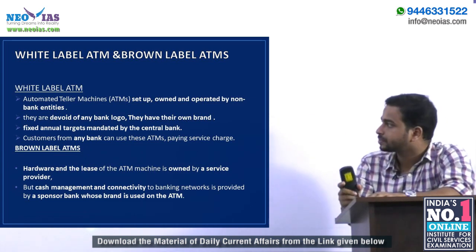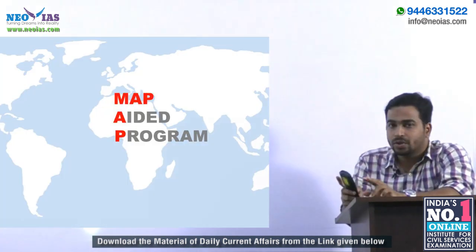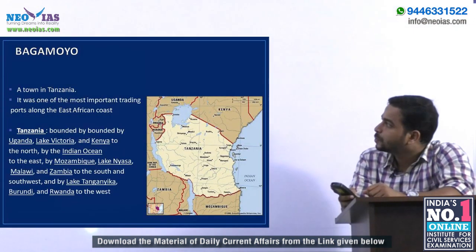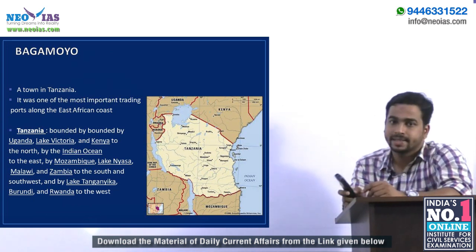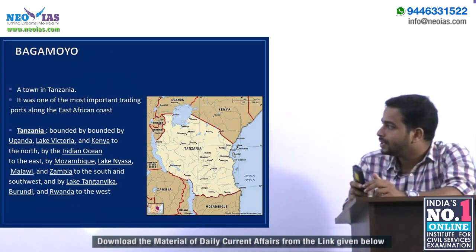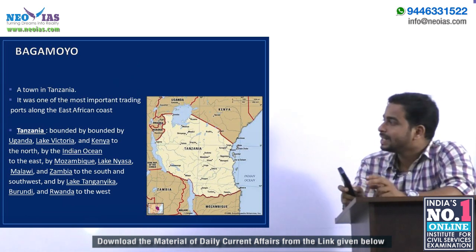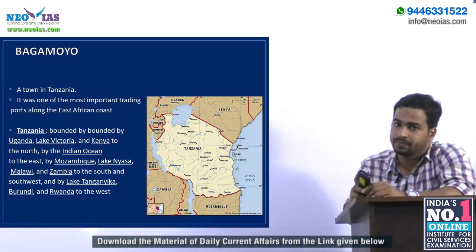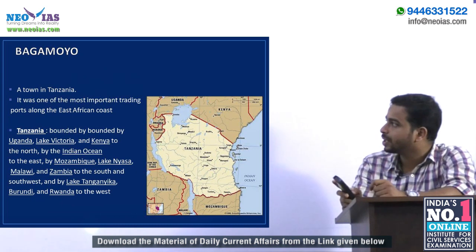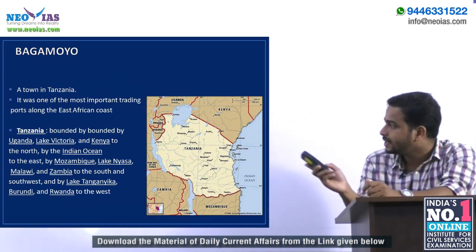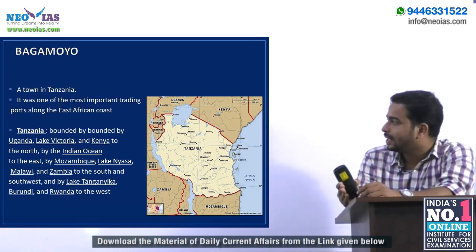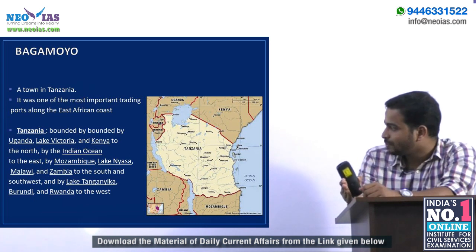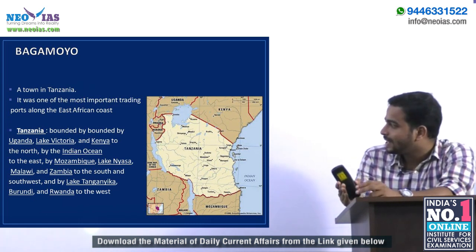In our Map Ed program, today we see Bagamoyo, which is a town in Tanzania, a country in the African continent. It was one of the most important trading ports along the East African coast. Tanzania is bounded by Uganda, Lake Victoria, and Kenya to the north; the Indian Ocean to the east; Mozambique, Lake Nyasa, Malawi, and Zambia to the south and southwest; and Lake Tanganyika, Burundi, and Rwanda to the west.